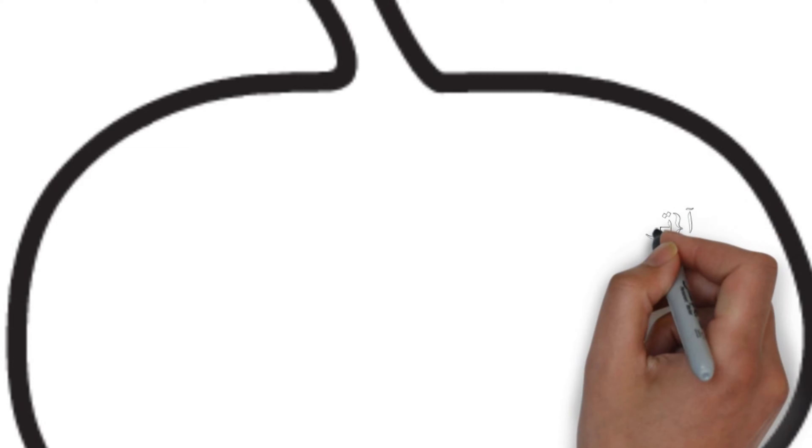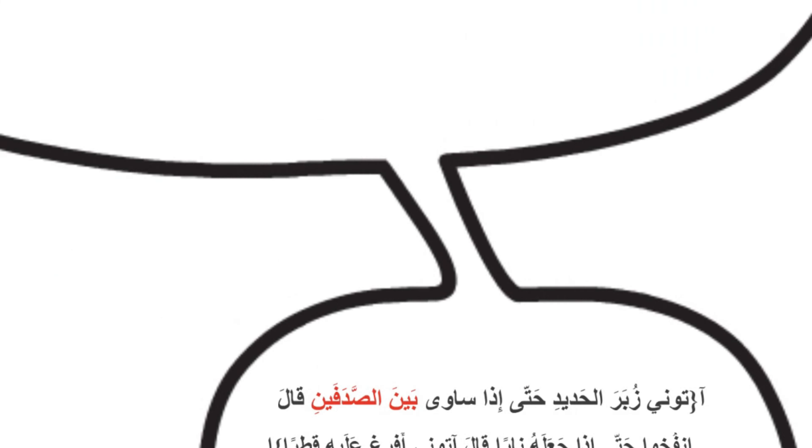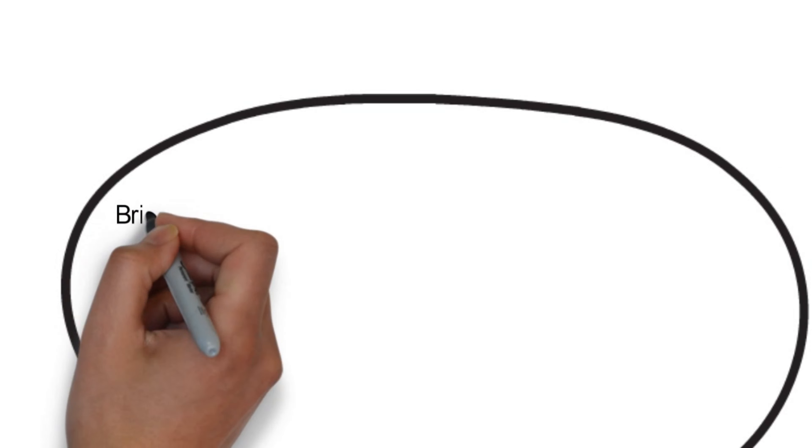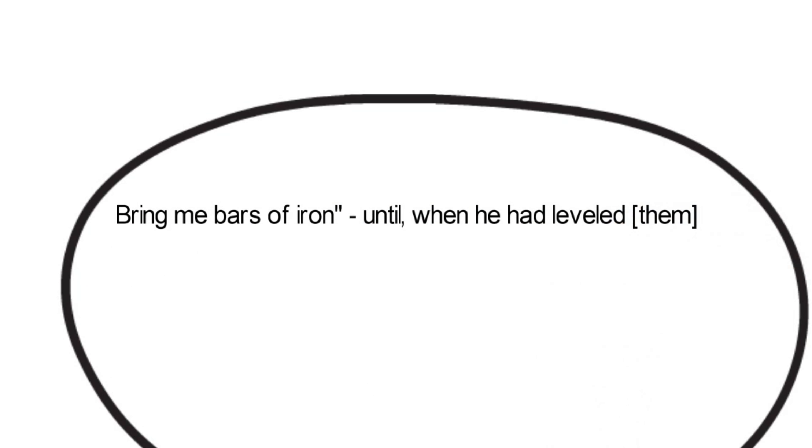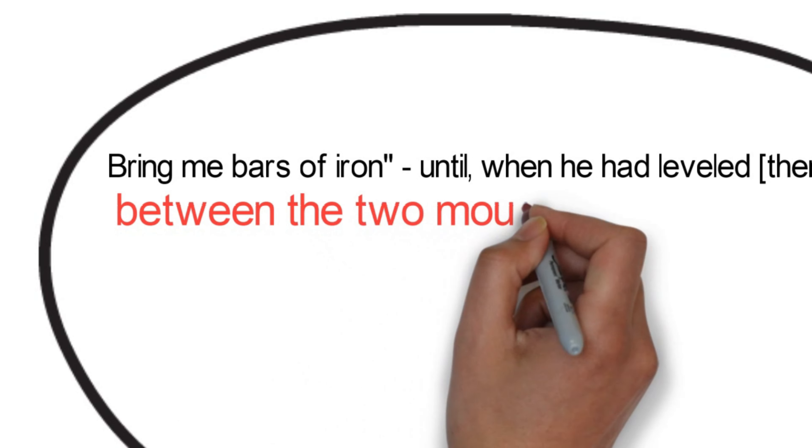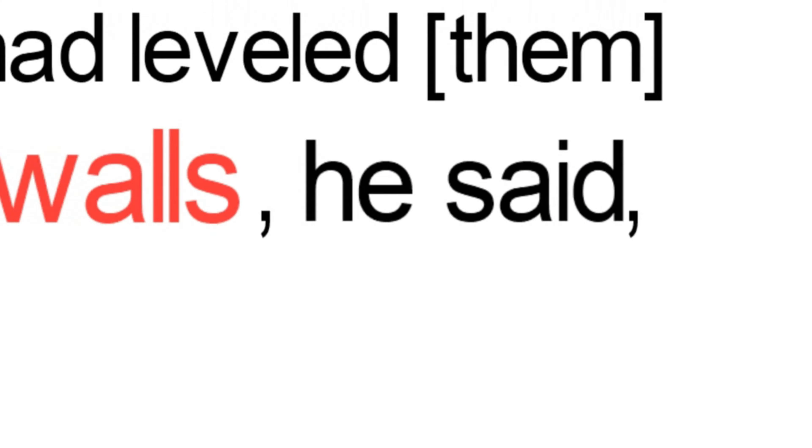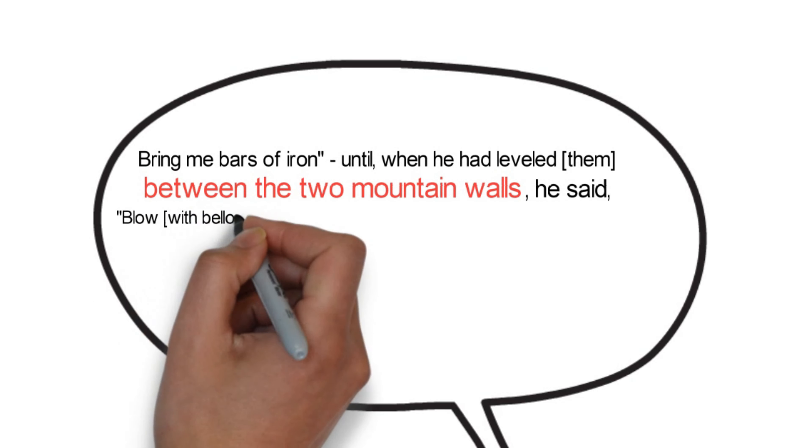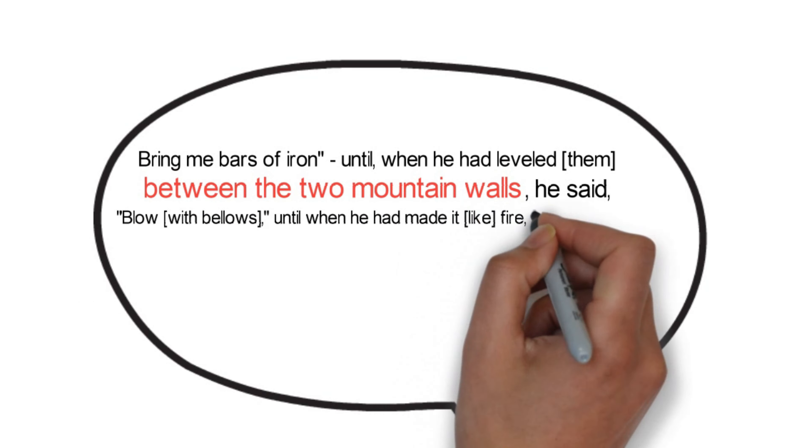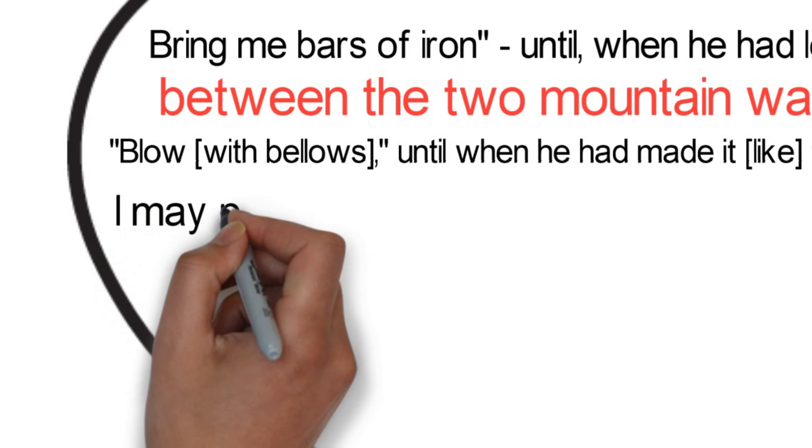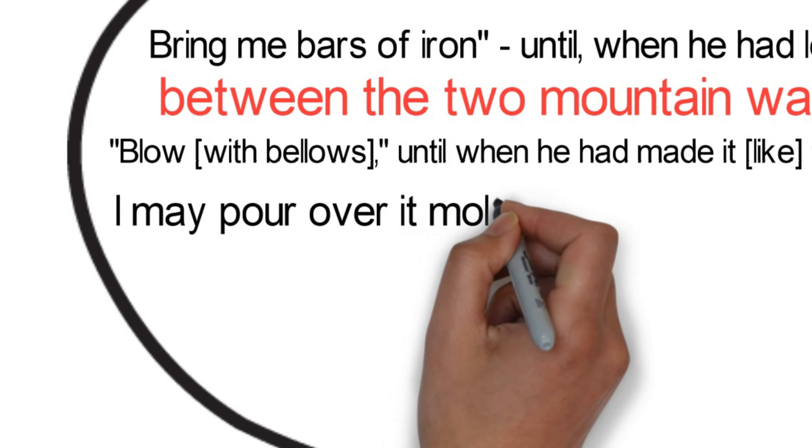Our quote this time says on the tongue of Dhul-Qarnayn in the Quran. He says, bring me bars of iron until when he had leveled them between the two mountain walls. He said, blow with bellows until when he had made it like fire. He said, bring me that I may pour over it molten copper.